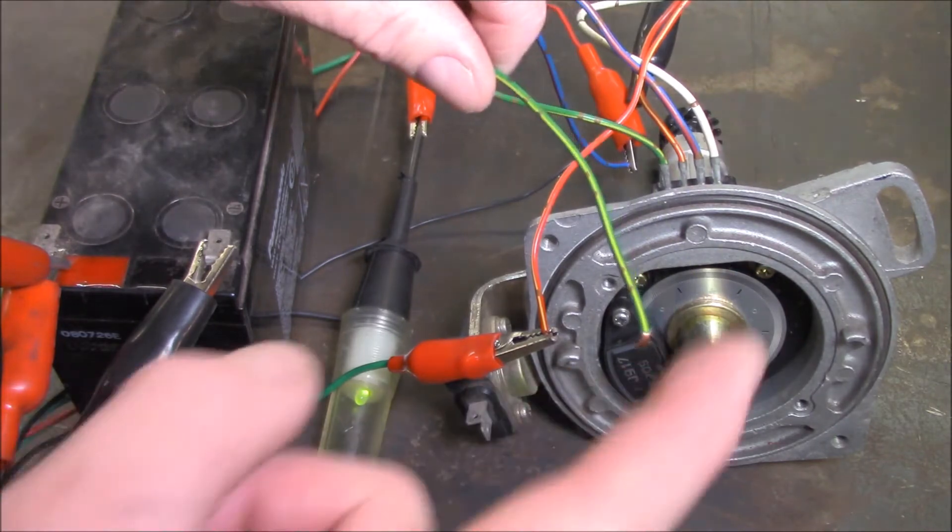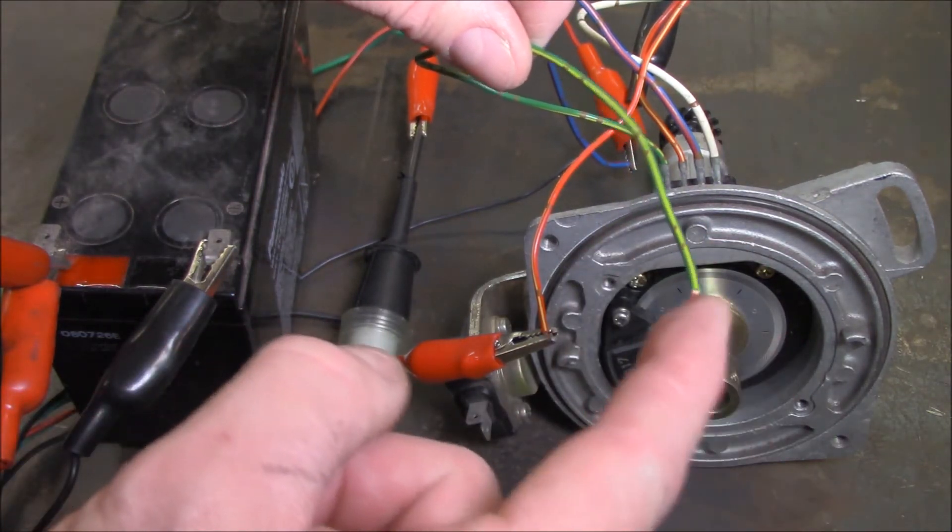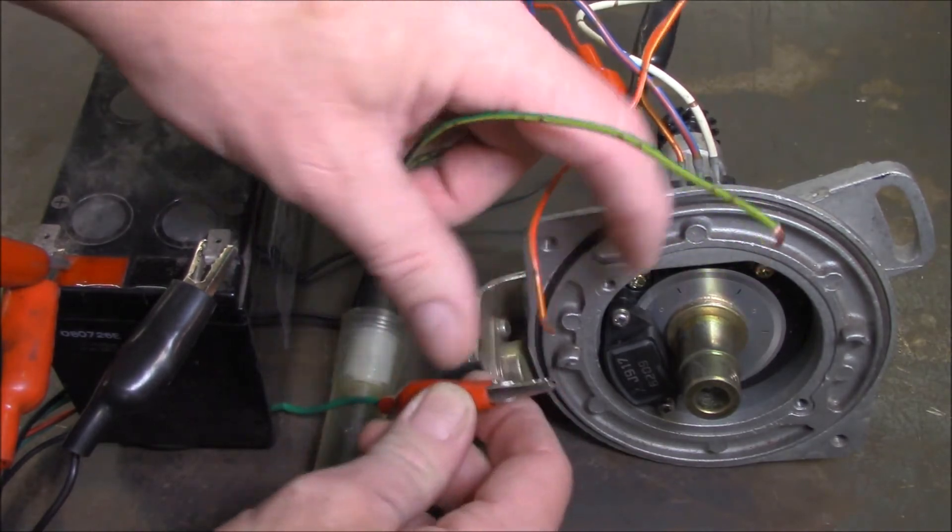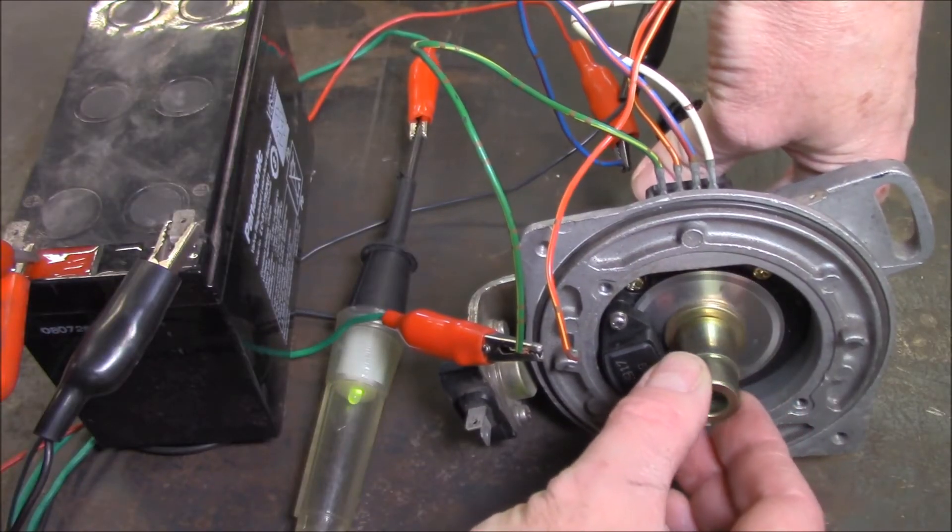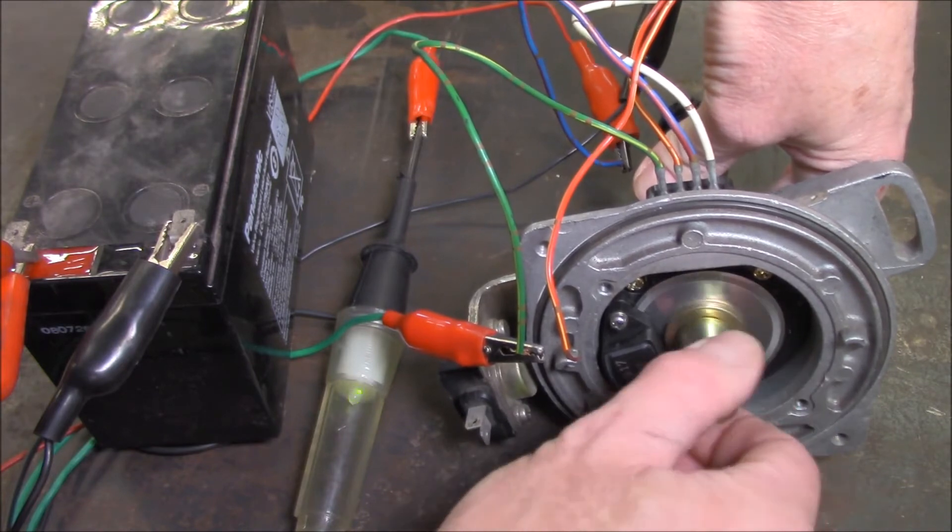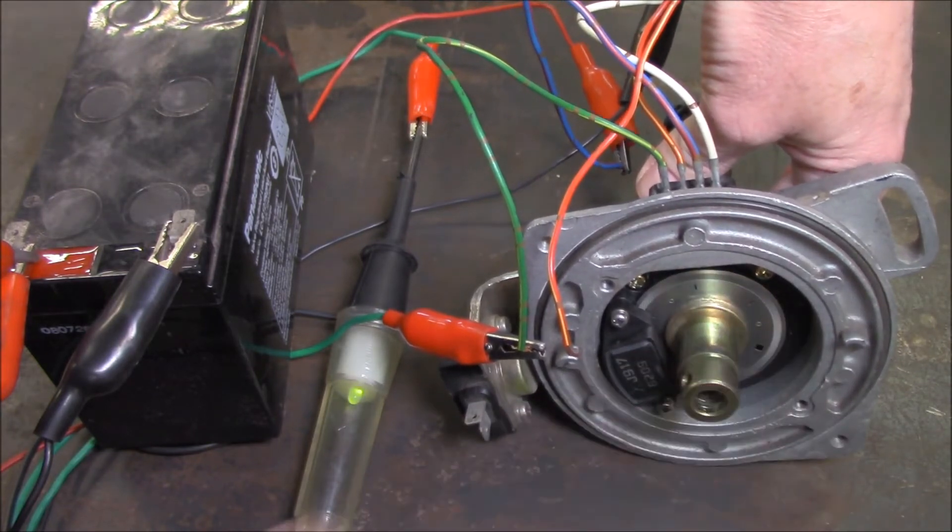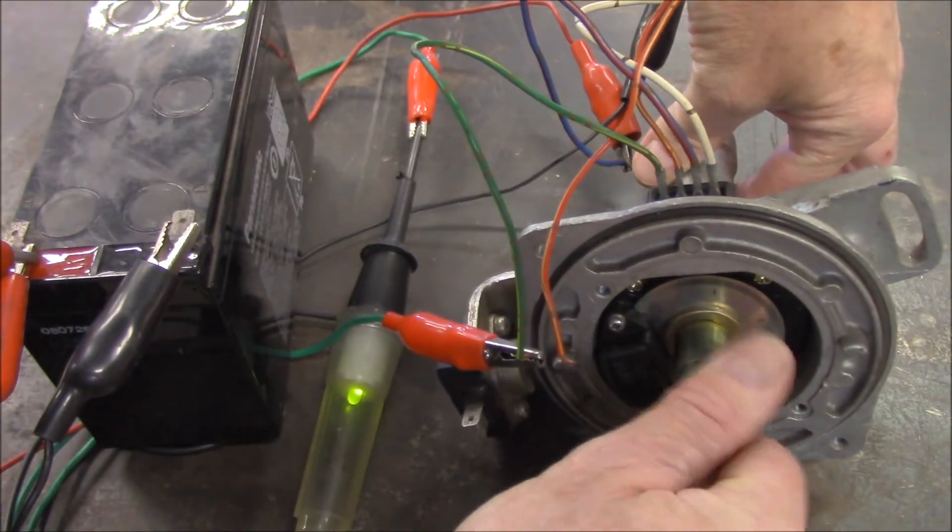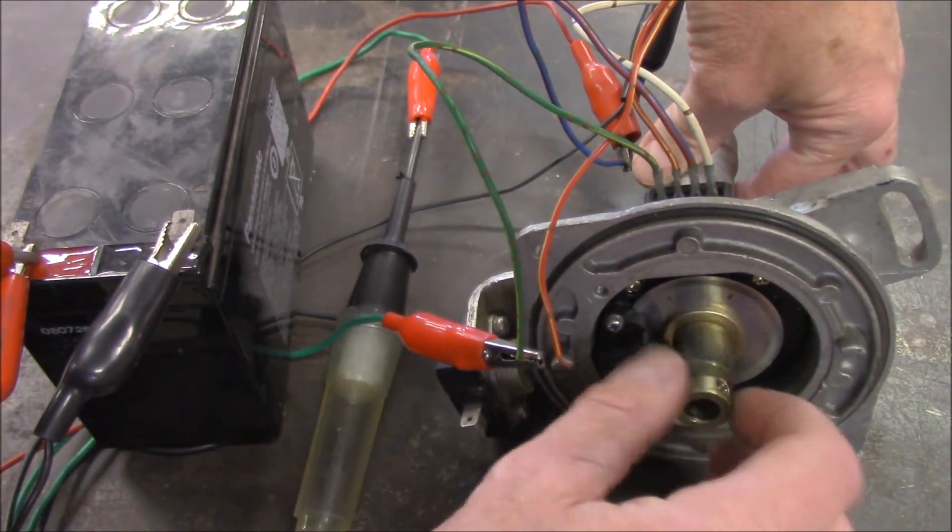So the next one we're going to go to is the 360 slots that are on the rotating disc. Let's have a look at what that one does. Once again we rotate the shaft and you can see it's flashing little tiny flashes there. Might just turn that light off so you can see it a little clearer. Can you see it flashing off and on there? 360 flashes per single revolution.